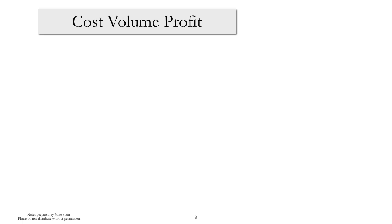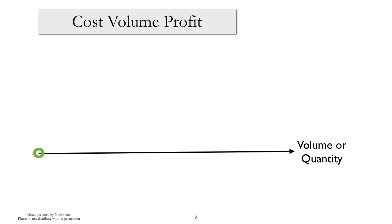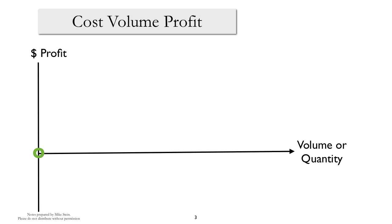The basics of cost-volume-profit analysis can be reviewed by looking at the cost-volume-profit graph. We'll start off by setting the origin, and then we'll have an axis that represents the volume or quantity of activity, another axis to represent the amount of profit. The next question is how to draw the graph relating volume to profit.